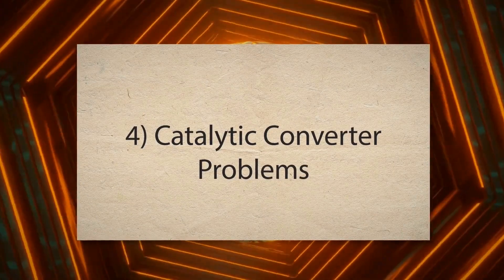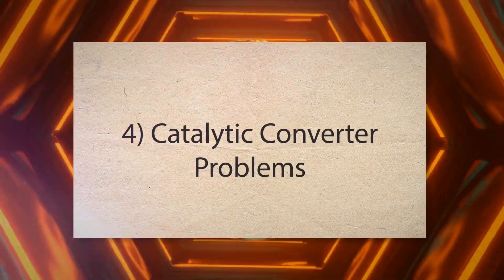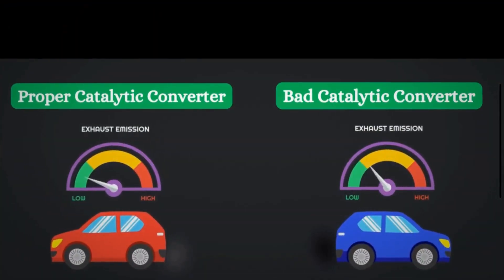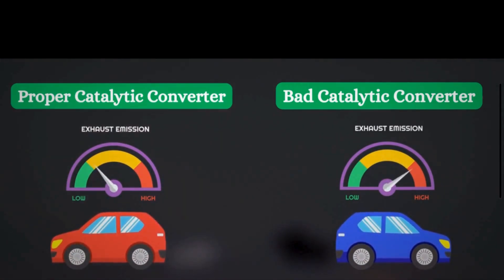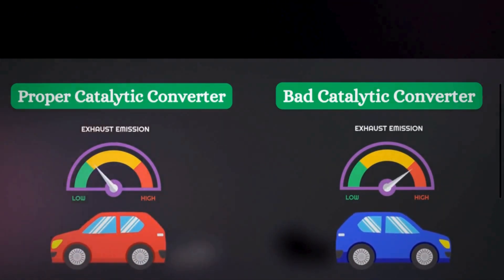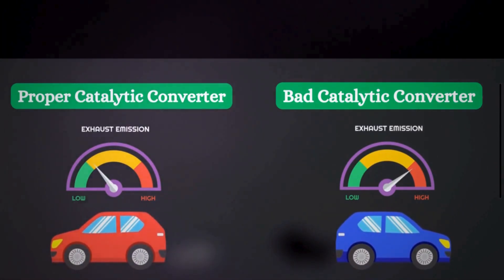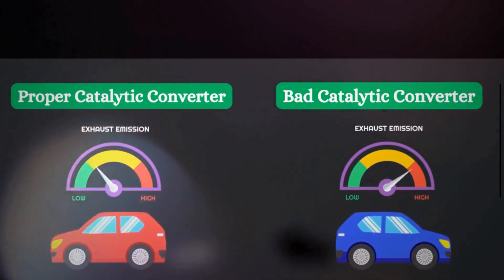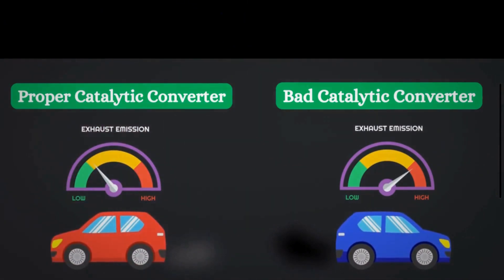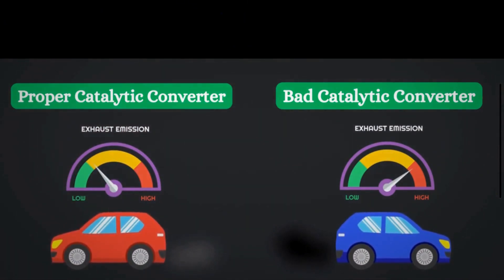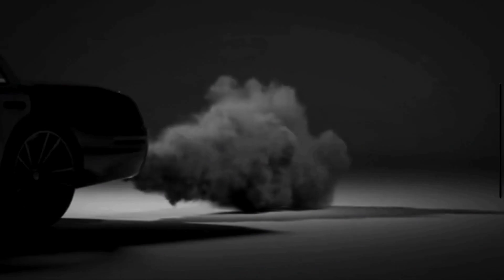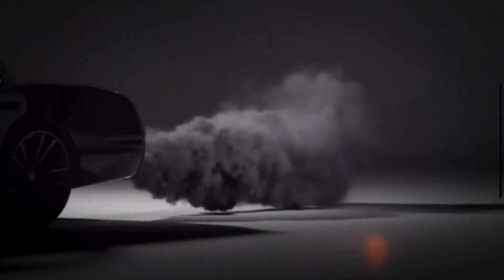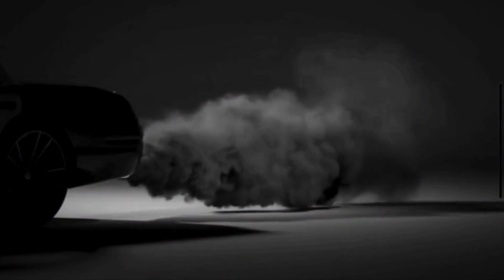4. Catalytic Converter Problems: The catalytic converter is designed to reduce harmful emissions by converting pollutants in the exhaust gases into less harmful substances. If the catalytic converter is failing or becomes inefficient, it may not be able to properly process the exhaust gases, leading to abnormal readings from the downstream oxygen sensor. This can trigger the PO-141 code.